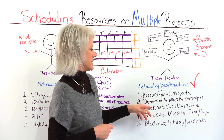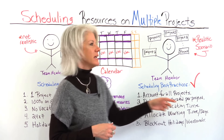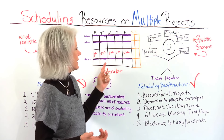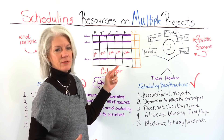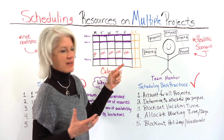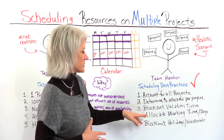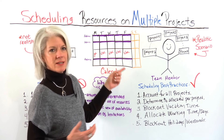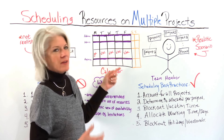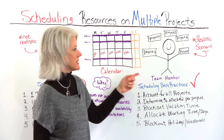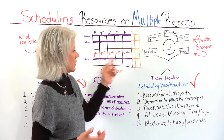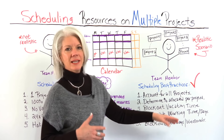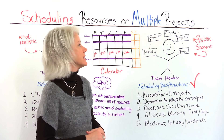We also need to block out vacation time on their calendar so that you're not scheduling activities for them to be due without accounting for that time. We also want to allocate working time — what days of the week do they work? Do they work every day? Do they work weekends? Do they work partial days? We need to account for that too, and block out any holidays or weekends that they may not work.